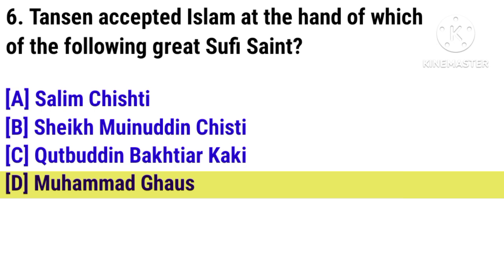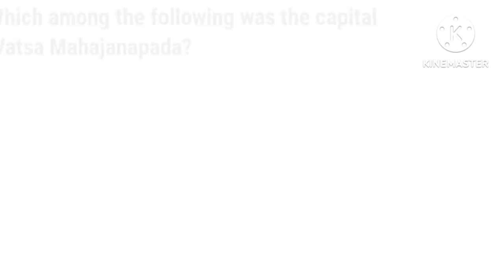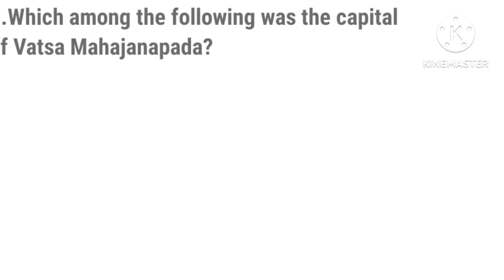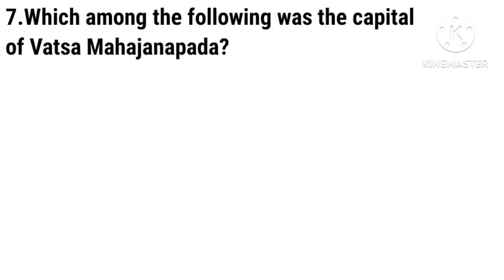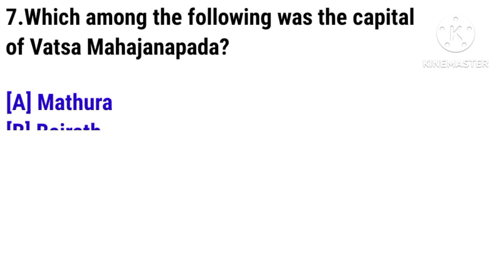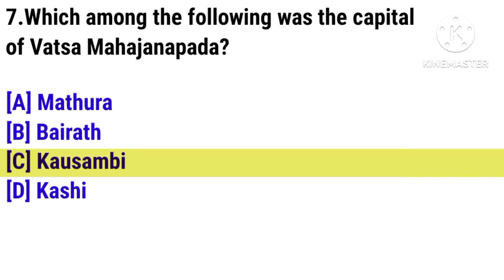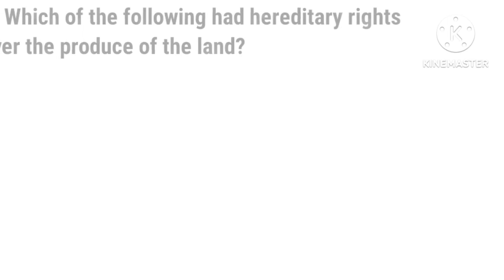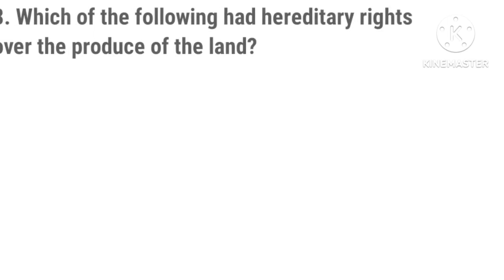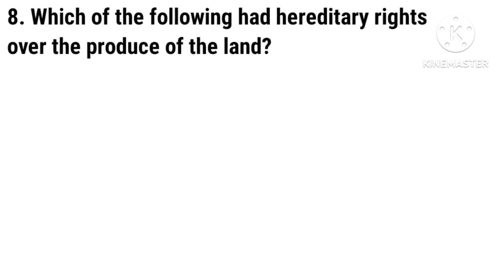Question 7: Which of the following was the capital of Vatsa Mahajanapada? Question 8: Which of the following had hereditary rights over the produce of the land?